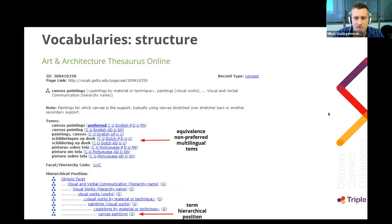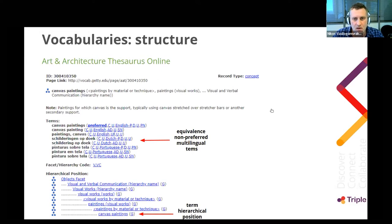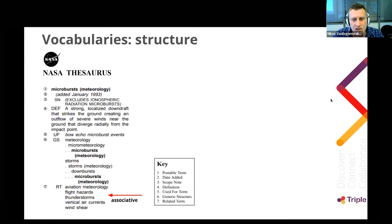Here we have an example of the term 'Karma Paintings' from the Arts and Architecture Thesaurus online from the Getty Institute, where the first set of terms lists multilingual versions of the term — an equivalence relationship — all leading back to the preferred version. The set below shows the position of the preferred term in the vocabulary hierarchy. Another example from the NASA Thesaurus shows an associative relationship: the preferred term is 'microbursts,' with related terms such as aviation, meteorology, flight hazards, thunderstorms, vertical currents, and wind shear.